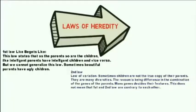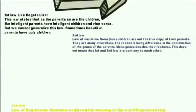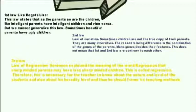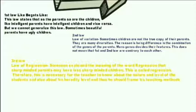The second law is the law of variation. Sometimes children are not a true copy of their parents; there is much diversity, due to different combinations of the genes of the parents. Many genes decide their features. This does not mean the first and second laws are contradictory. The third law is the law of regression. Sorenson explained that sharp-minded parents might have less sharp-minded children — this is called regression. Therefore, teachers must know the nature, level, and heredity background of their students in order to frame their teaching methods accordingly.